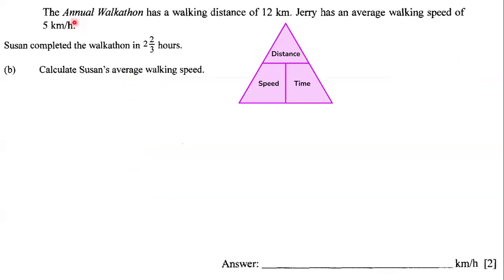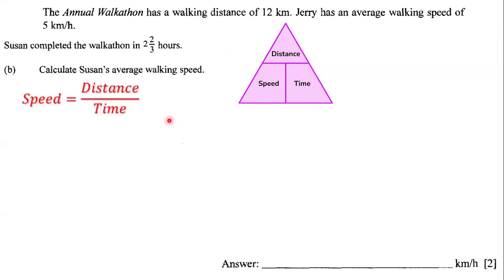Next, the question states that Susan completed the walkathon in 2 and 2 thirds of an hour. They want us to calculate Susan's average walking speed. Once again, we're going to use our speed-distance-time triangle. According to this triangle, if you want to figure out the speed, the speed is going to be the distance divided by the time. That's the formula we're going to use.